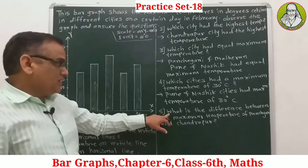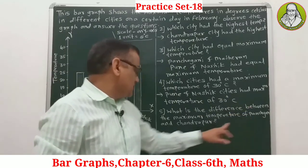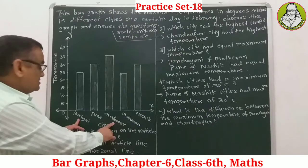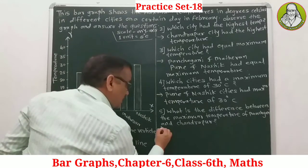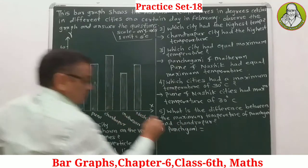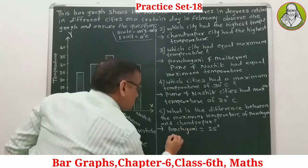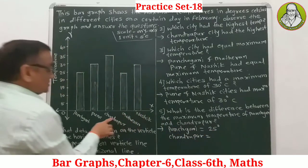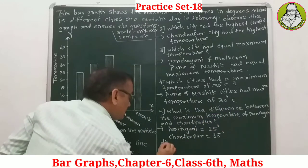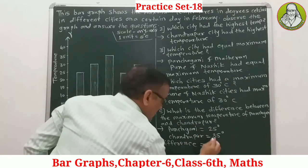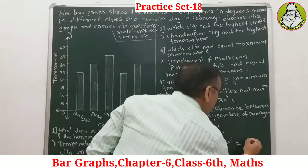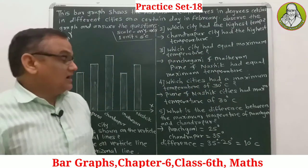Question 5: What is the difference between the maximum temperature of Pachagani and Chandrapur? The temperature of Pachagani is 35 degrees centigrade, and the temperature of Chandrapur is 10 degrees centigrade higher, giving a difference of 10 degrees centigrade.